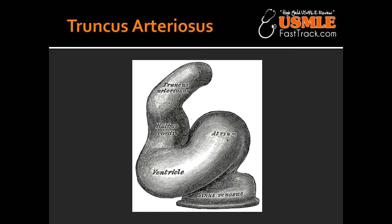Truncus arteriosus. Describing how neural crest eventually becomes the ascending aorta and the pulmonary trunk: from the neural crest migration, it eventually has truncal and bulbar ridges that spiral and fuse to form the aorticopulmonary septum, which eventually becomes the ascending aorta and the pulmonary trunk.